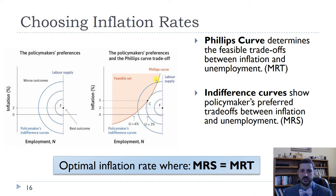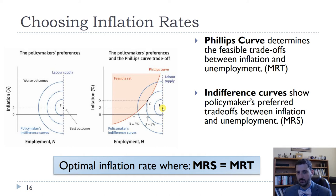The feasible set is the Phillips curve. We can sort of choose where on the Phillips curve we want by choosing whichever point is on the highest indifference curve. We'd like to be at point F, but that's not feasible because of the Phillips curve and the bargaining gap.